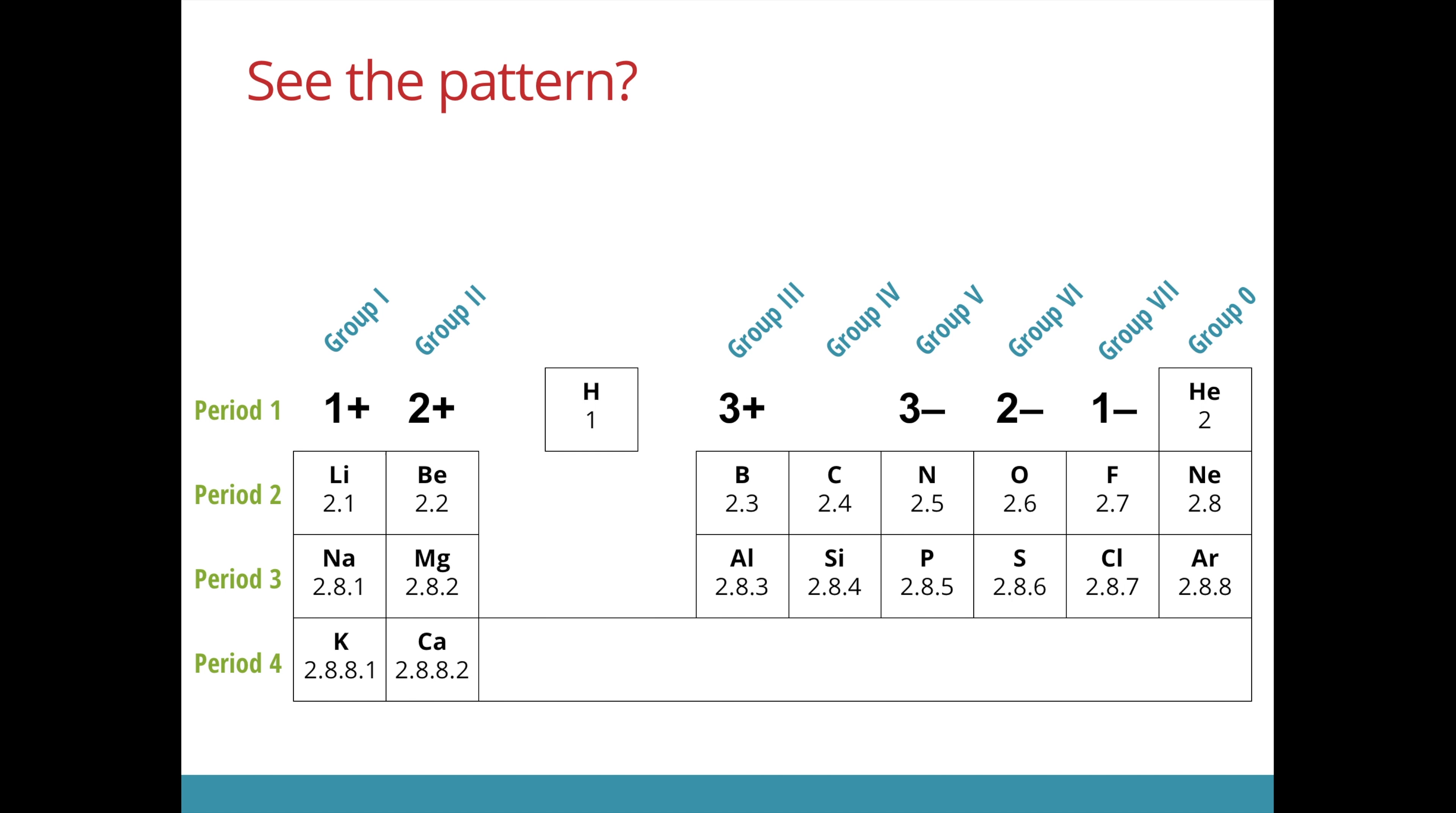If we look at the periodic table, we see a pattern in terms of the position of the element in the periodic table and the charge of the ion formed. Elements in group 1 tend to form ions with a 1 plus charge. Atoms in group 2 tend to lose their 2 valence electrons to form ions of a 2 plus charge.